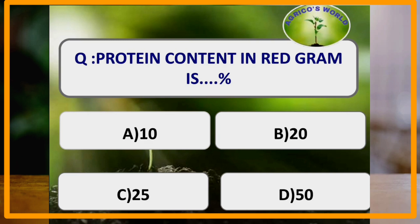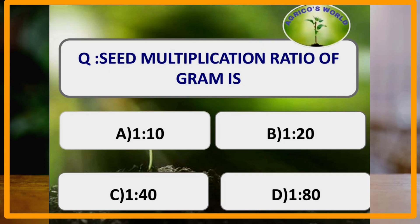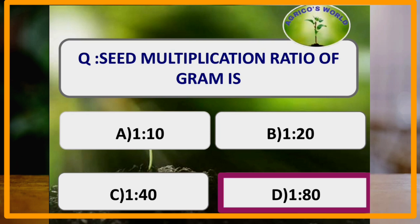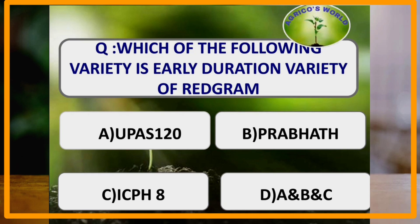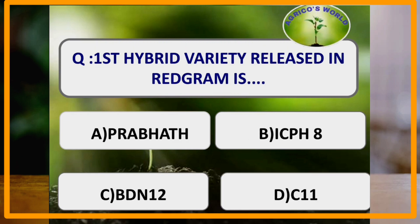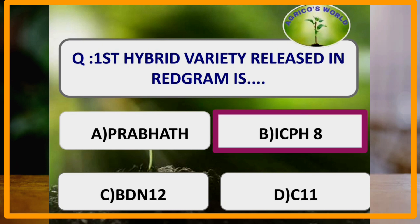Protein content in red gram is 25%. Seed multiplication ratio of gram is 1:80. Early duration varieties of red gram are Upas 120, Prabhat, and ICPH-8 — all three are early duration varieties. The first hybrid variety released in red gram is ICPH-8, and it was released from ICRISAT in the year 1991.